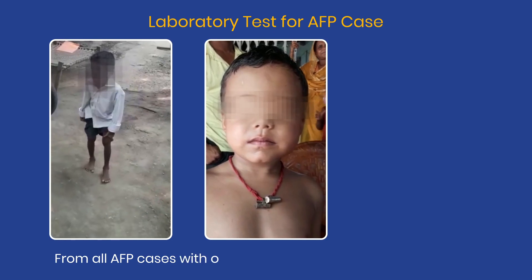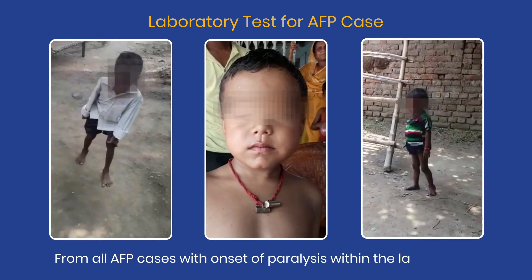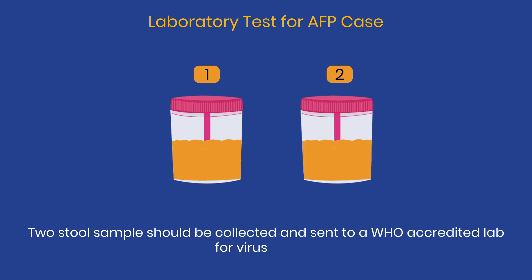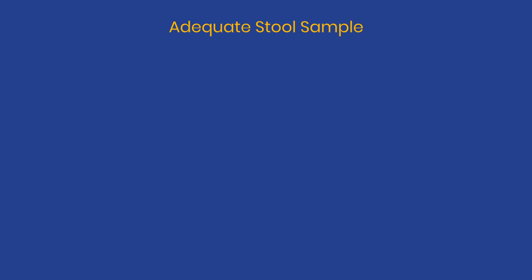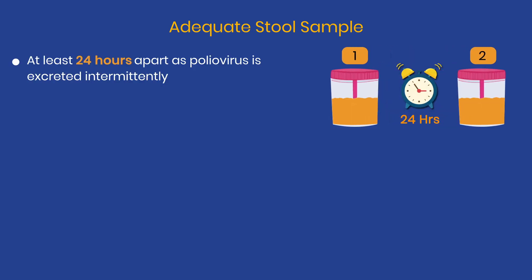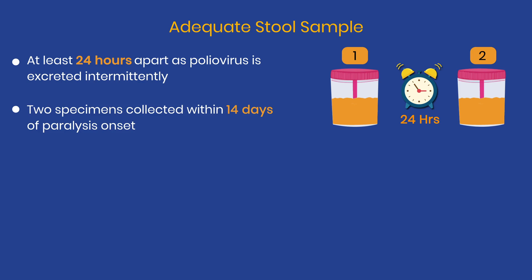From all AFP cases with onset of paralysis within the last 60 days, two stool samples should be collected and sent to a WHO accredited lab for virus culture. There should be a gap of at least 24 hours between the two samples, in view of intermittent shedding of the virus in the stool. Samples can be collected up to 60 days of paralysis onset, but the chances of polio virus isolation decrease beyond 14 days of onset of paralysis.